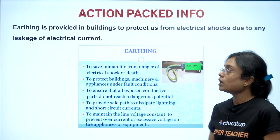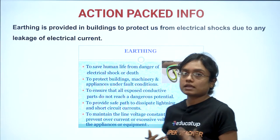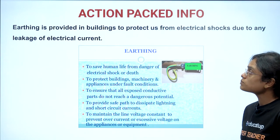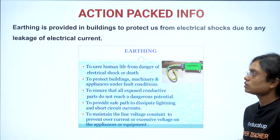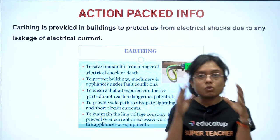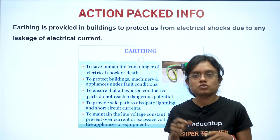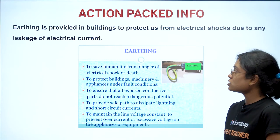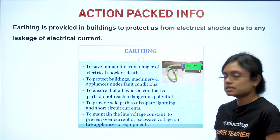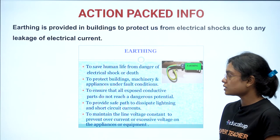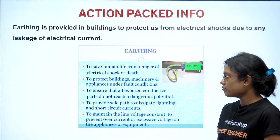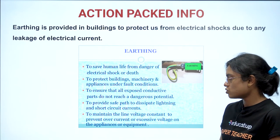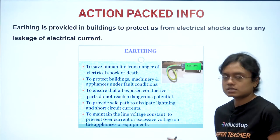Earthing is provided in buildings to protect us from electrical shocks due to leakage of electrical current. The earthing connection saves human life from danger of electrical shock or death, protects buildings, machinery and appliances under fault conditions, ensures exposed conductive parts do not reach a dangerous potential, provides a safe path to dissipate lightning and short circuit currents, and maintains line voltage constant to prevent excessive voltage on appliances.